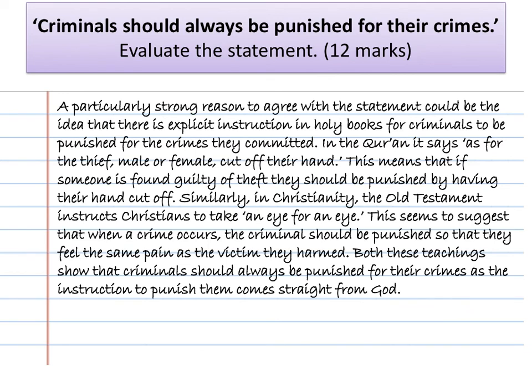Here's a possible answer that shows you the structure you should have been using. A particularly strong reason to agree with the statement could be the idea that there is an explicit instruction in holy books for criminals to be punished. In the Quran it says: as for the thief, male or female, cut off their hand — meaning if someone is found guilty of theft they should be punished by having their hand cut off. Similarly, in Christianity in the Old Testament it instructs Christians to take an eye for an eye, suggesting the criminal should be punished so they feel the same pain as the victim. Both teachings show that criminals should always be punished as the instruction to punish them comes straight from God.